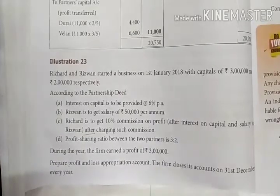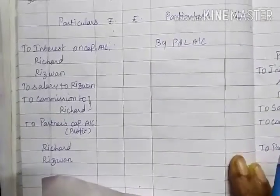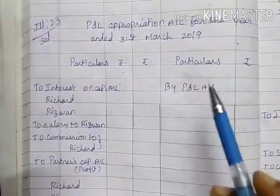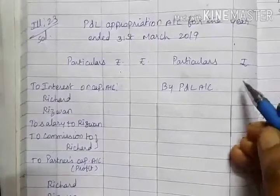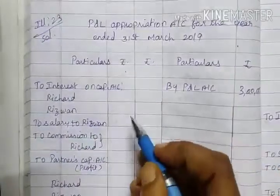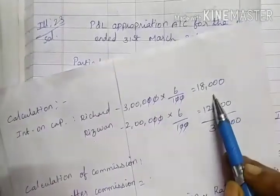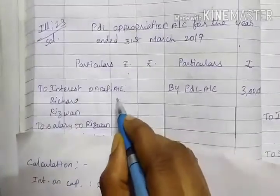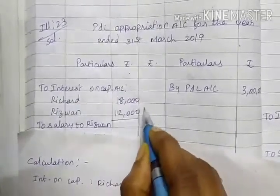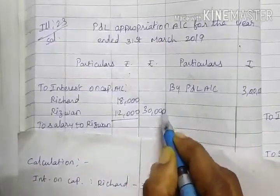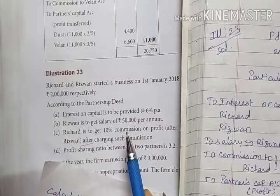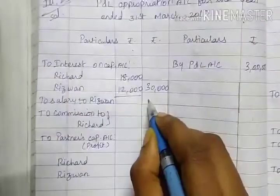Net profit: Rs. 3,00,000. Solution — Profit and Loss Appropriation Account for the year ending 31st December. Credit side: By Profit and Loss Account Rs. 3,00,000. Debit side: Interest on capital — Richard Rs. 18,000, Rizwan Rs. 12,000, total Rs. 30,000. Salary to Rizwan: Rs. 50,000 per annum, so salary Rs. 50,000.